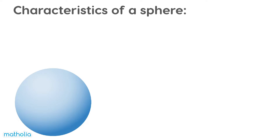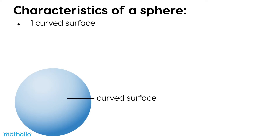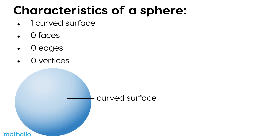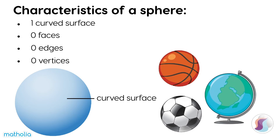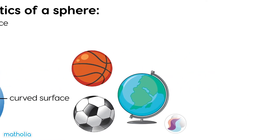What are the characteristics of a sphere? It has one curved surface, no faces, no edges, and no vertices. Look at these objects. What are some other objects shaped like spheres?